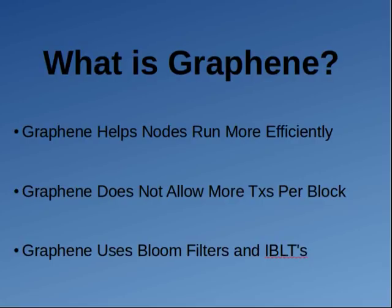All graphene does is it helps you with what is called block propagation. Block propagation is when you send the transactions from one block to another node on the network — everybody has to download the block. Graphene just helps you download the next block more efficiently. If you're running a full node, when someone does an unconfirmed transaction that is broadcast through the nodes, the nodes have already heard it — they call it 'hearing' an unconfirmed transaction. But once you download the block, you have to download that transaction again even though you already know about it. So what graphene does is it makes it so that you don't have to download these transactions twice, basically making nodes twice as efficient.